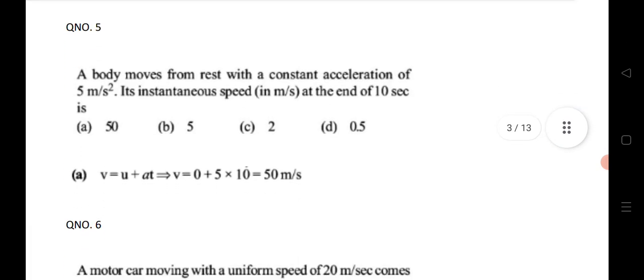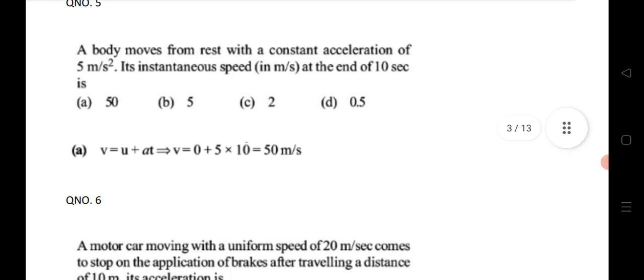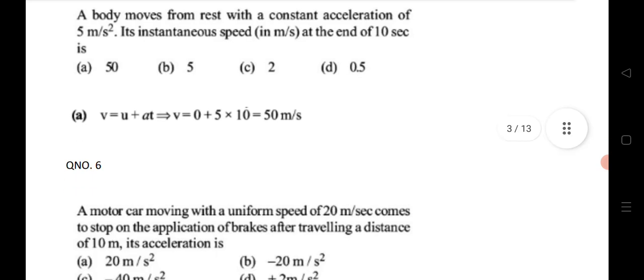Fifth question uses the first equation of motion. There are three important formulas: v = u + at, s = ut + ½at², and v² − u² = 2as. Here we use the first equation. The body moves from rest, so initial velocity u = 0, with constant acceleration given — substitute in v = u + at to get the final velocity.